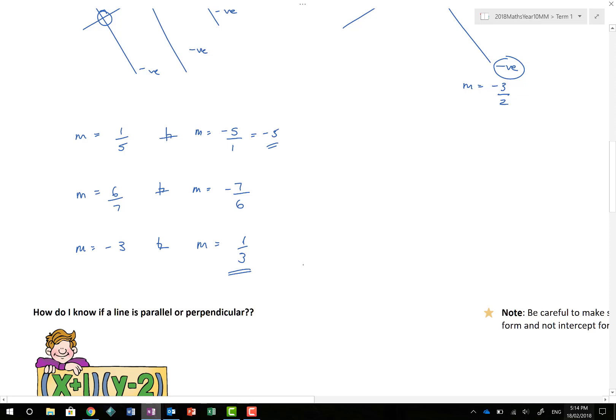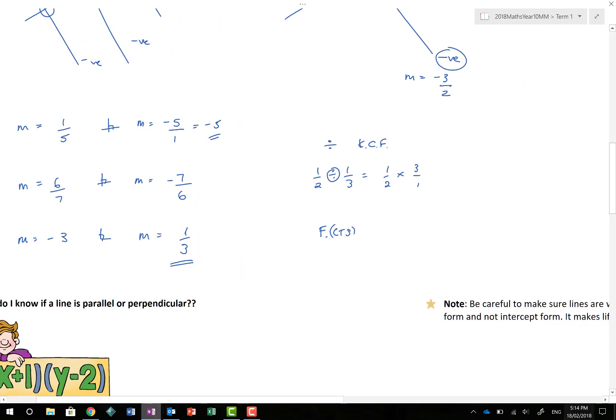Remember when we do divides, we have keep, change, flip. So if we have a half divided by a third, we keep the half, we change, and we flip. Exactly the same type of thing happens here, but the fractions flip and then change the sign. So flip and then change the sign. We had 1 over 5, flip the fraction upside down gives us 5 over 1, and what was positive becomes negative.